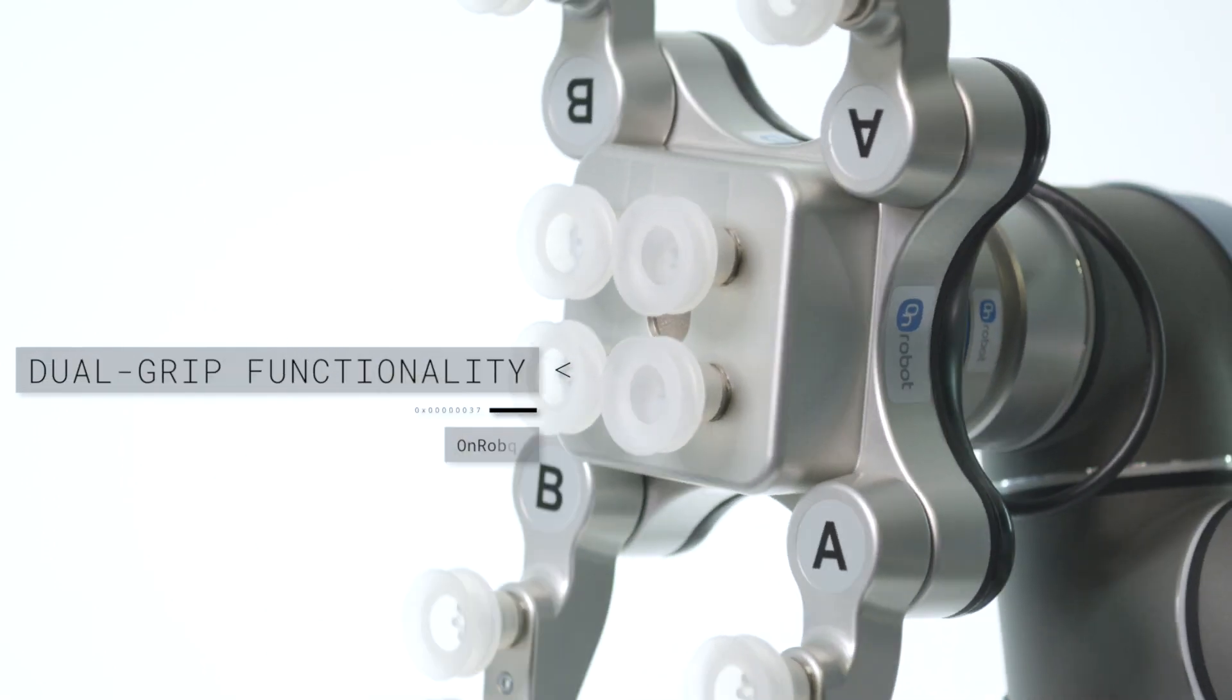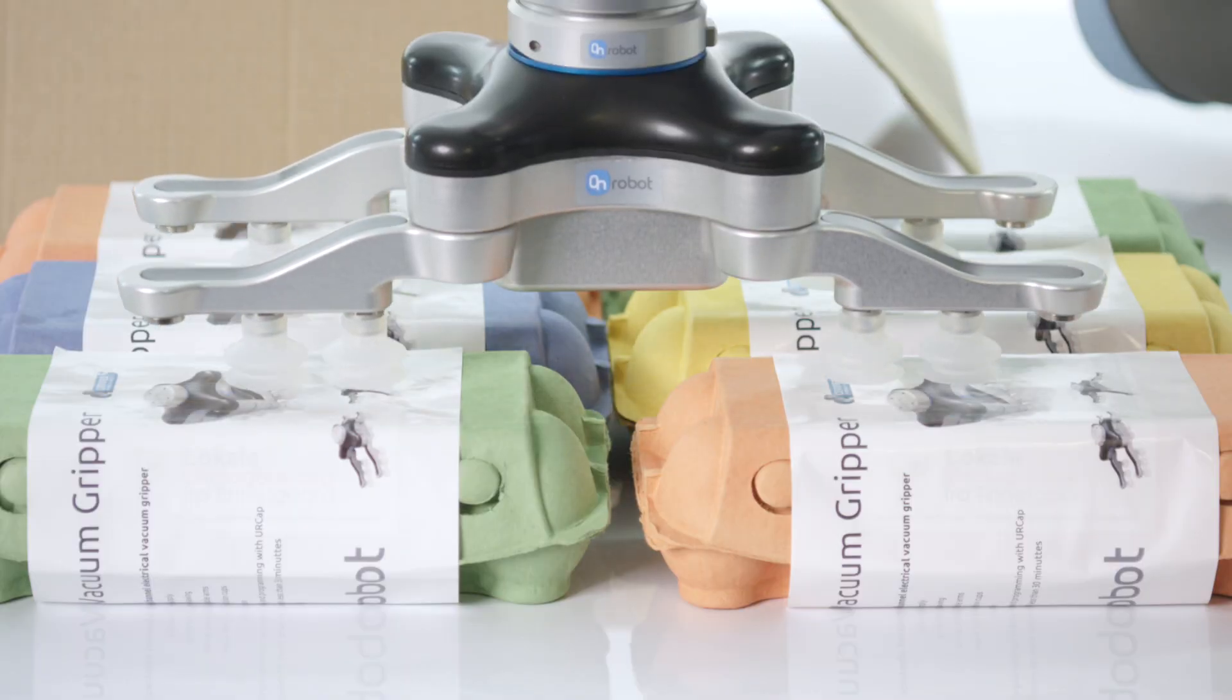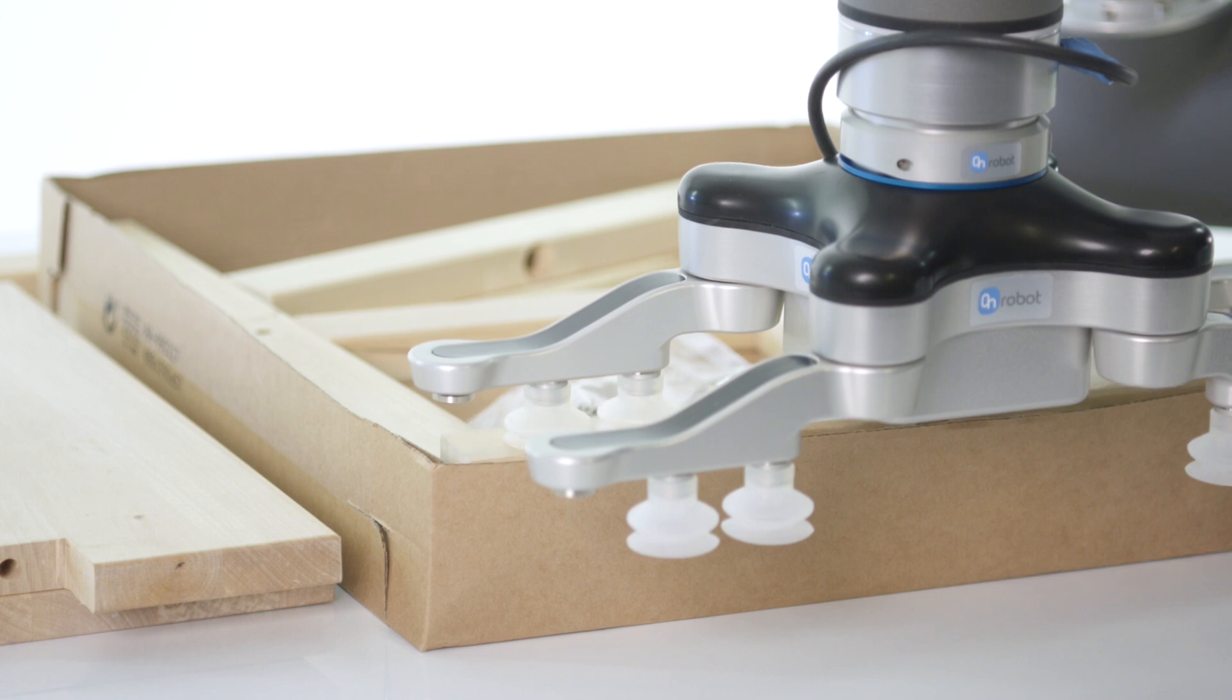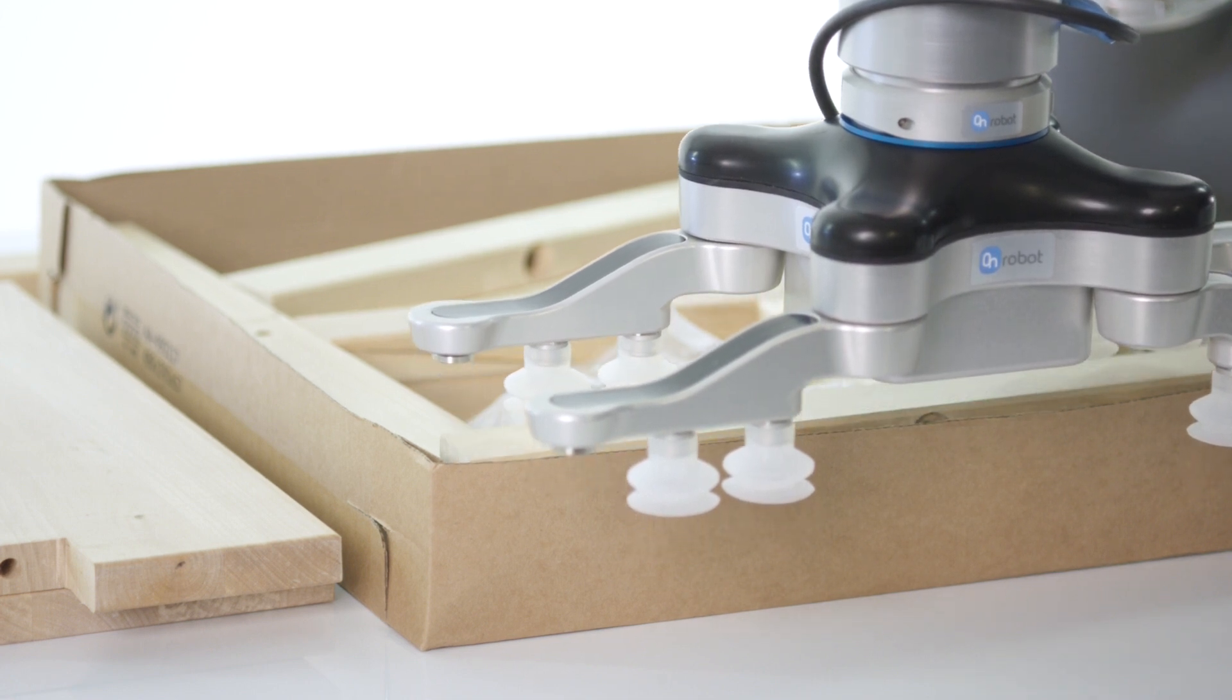The VG10 comes with dual grip functionality and can lift up to 10 kg. It can handle two products simultaneously with a flexible adjustment of suction cup arms.